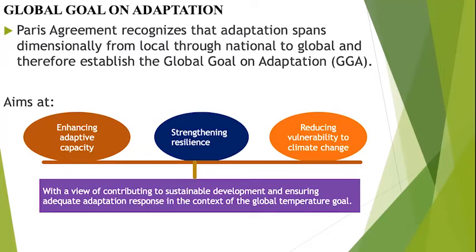Coming to the global goal on adaptation: the Paris Agreement recognizes that adaptation spans dimensionally from local to national to global, and therefore it established the global goal on adaptation. The global goal on adaptation under the Paris Agreement aims at enhancing adaptive capacity, strengthening resilience, reducing vulnerability to climate change, with a view of contributing to sustainable development, and ensuring an adequate adaptation response in the context of the global goal. That is how it is defined within the Paris Agreement.